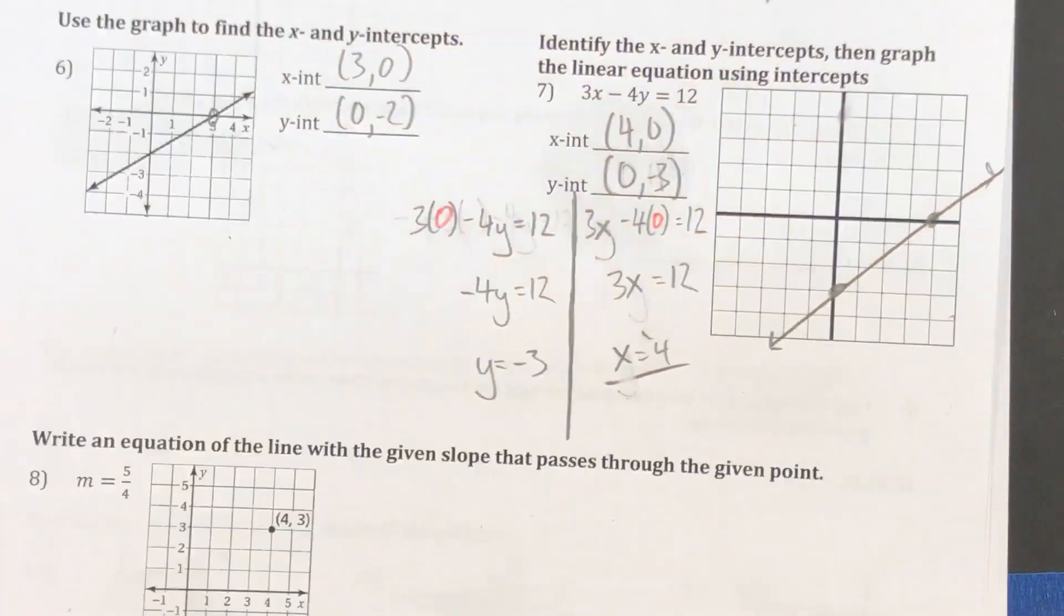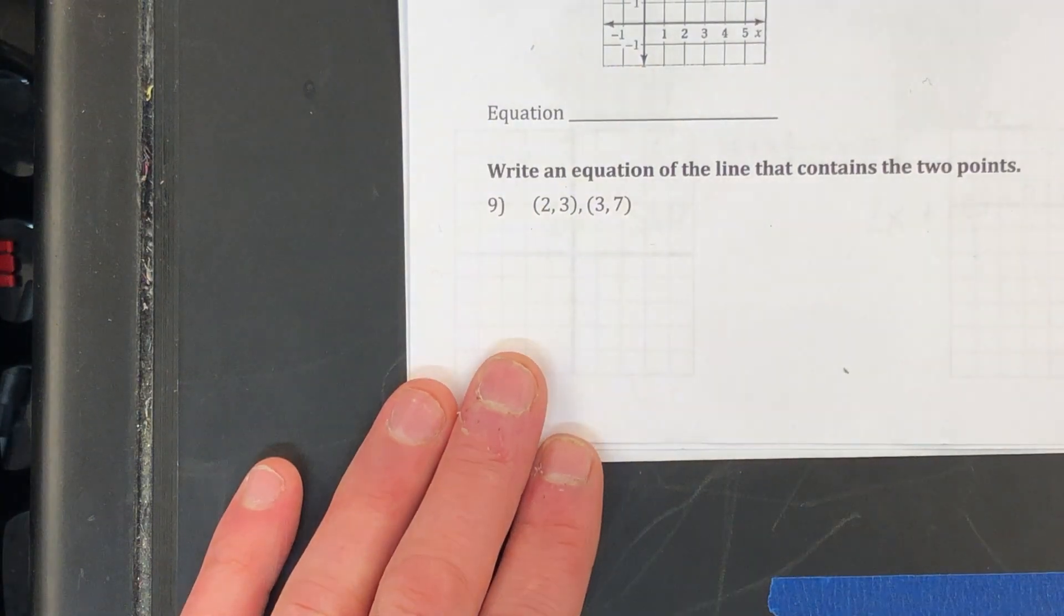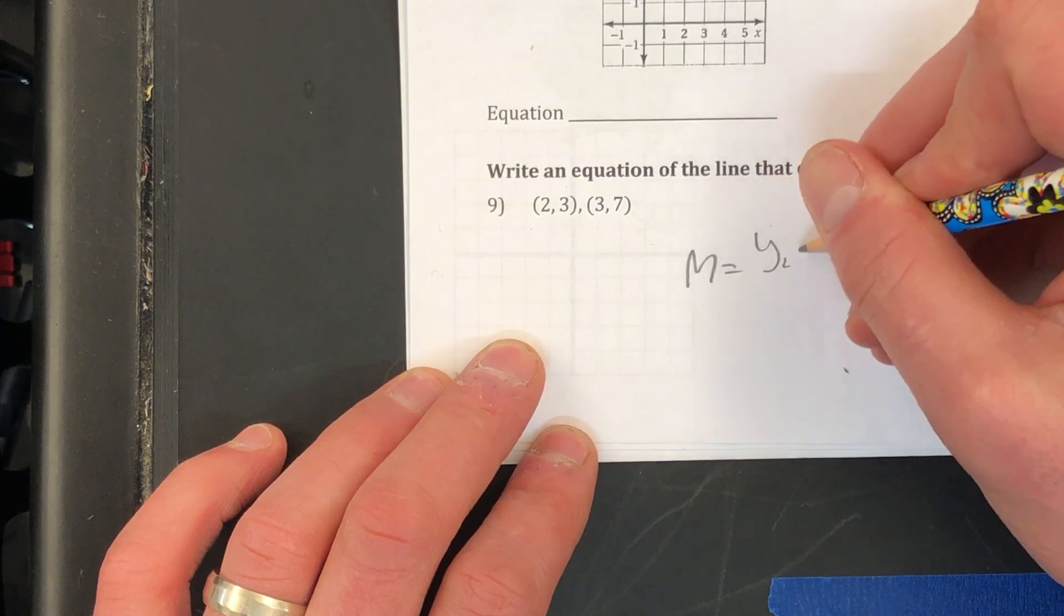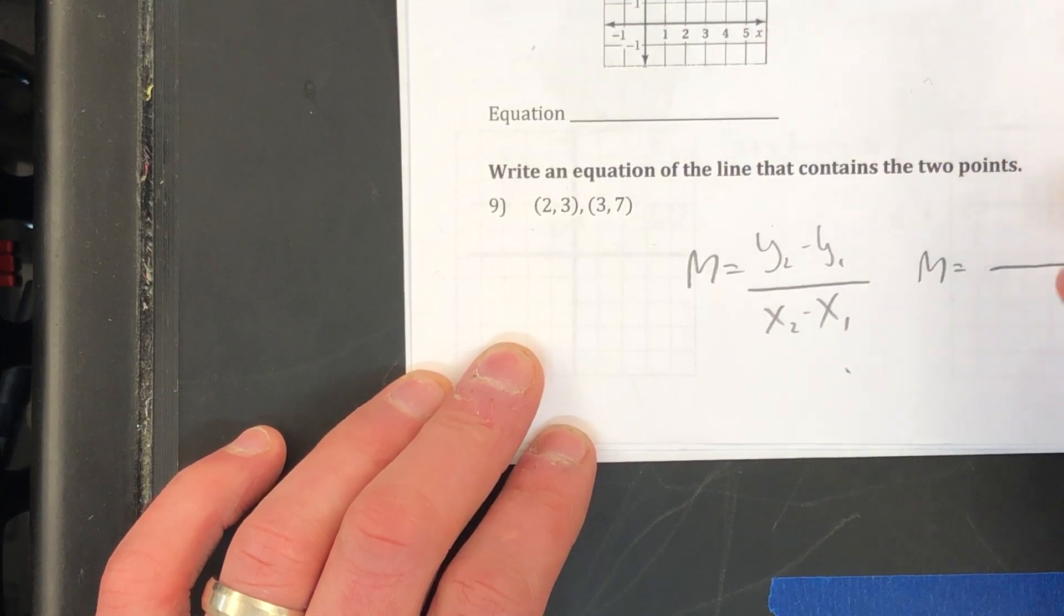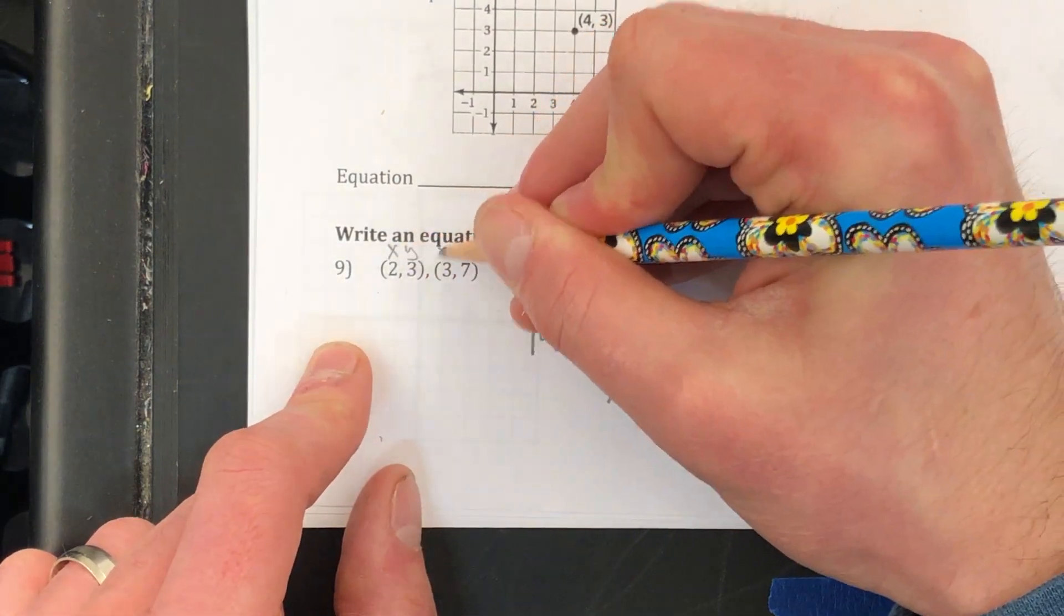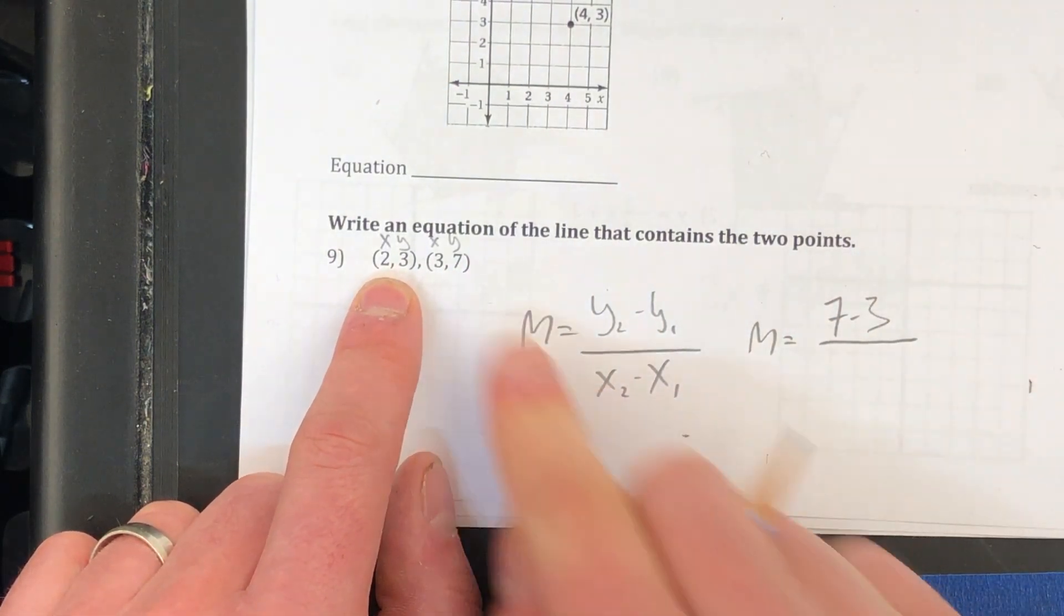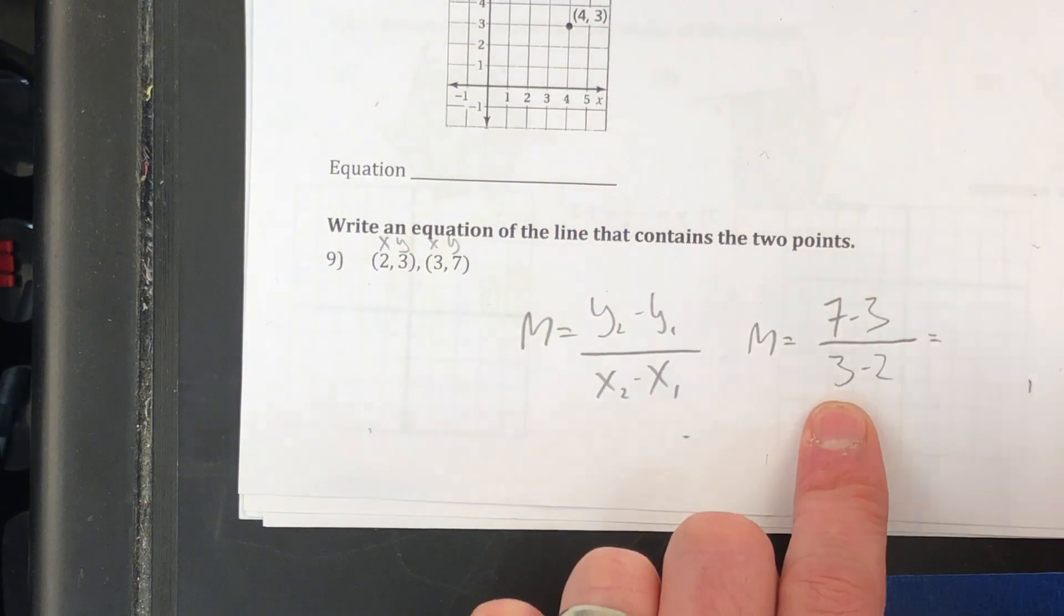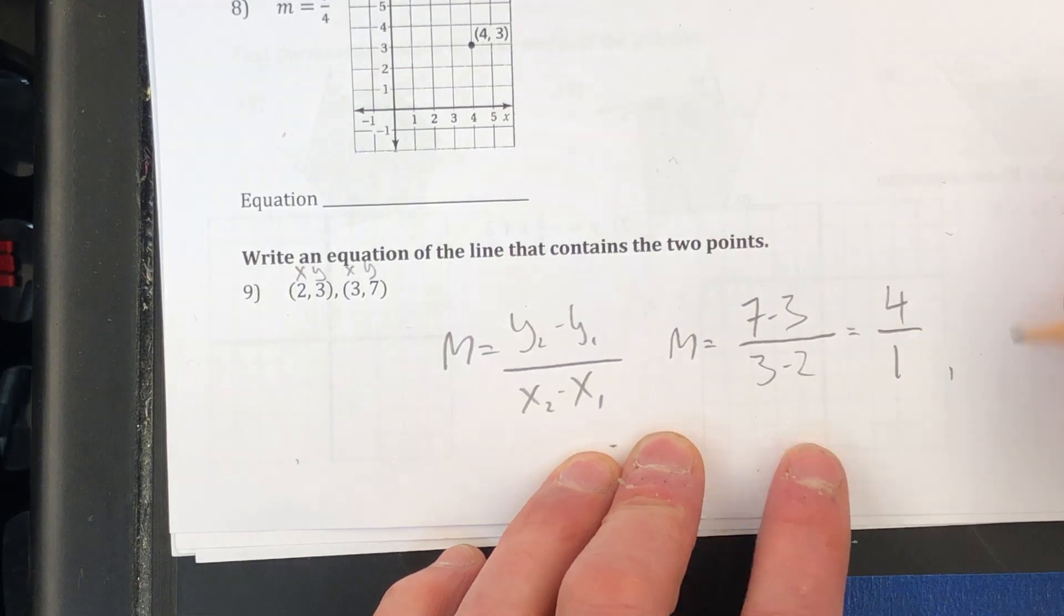And I think I will do one more problem for y'all, actually. Let's go down to number 9. Let's look at number 9 here. Just a quick reminder about finding the slope between two points, I can use this formula. m equals y2 minus y1 over x2 minus x1, which is fancy for, we're just going to take the y values and subtract them. So in this case, my y values are 7 and 3. So I'm going to do 7 minus 3. My x values are 3 minus 2. So 7 minus 3 is 4. 3 minus 2 is 1. So my slope here is just 4.